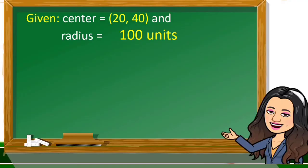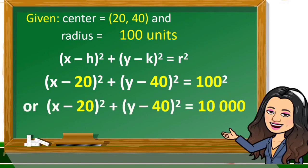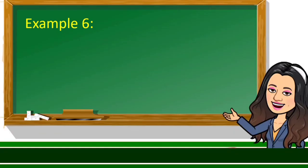To find the equation, use the standard form with center (20, 40) and radius 100 units. Substituting the values, we get the square of the quantity x minus 20 plus the square of the quantity y minus 40 is equal to 100 squared, which equals 10,000. This is the graph of the circle.